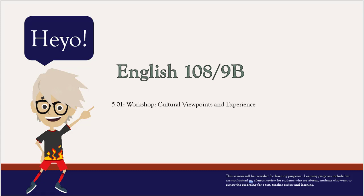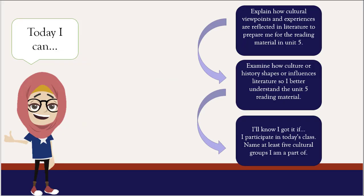Hi everybody, this is a quick review of our first unit 5 lesson, 5.01 workshop: Cultural Viewpoints and Experience. The I Can statements for today are: explain how cultural viewpoints and experiences are reflected in literature to prepare me for the reading material in Unit 5. And finally, I'll know I got it if I participate in today's class and name at least five cultural groups that I am a part of.